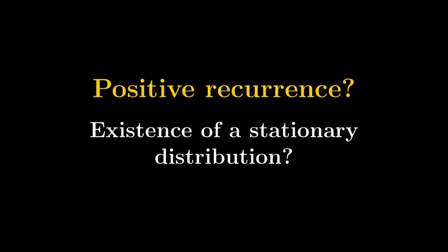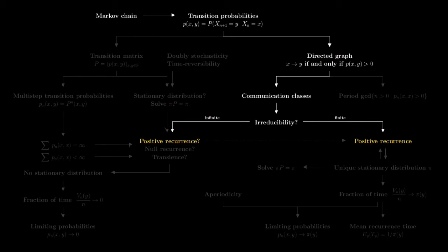The second step is checking whether the process is positive recurrent. This is important because it tells us about existence of a stationary distribution. Combining irreducibility and positive recurrence gives existence and uniqueness of the stationary distribution. Case one: if the state space is finite, you get positive recurrence for free, which implies existence and uniqueness of the stationary distribution.